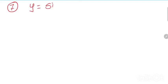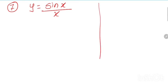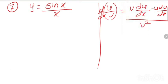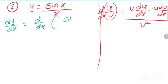Problem number 7: y is equal to sin x divided by x. The formula we are going to use is the u by v formula: d by dx of u by v equals v du upon dx minus u dv upon dx, divided by v square.